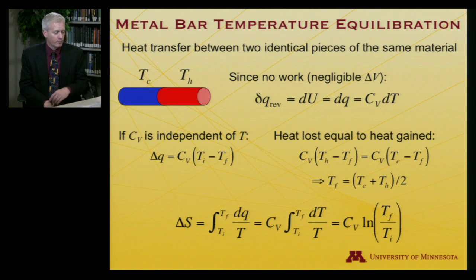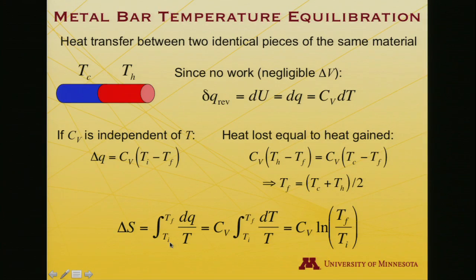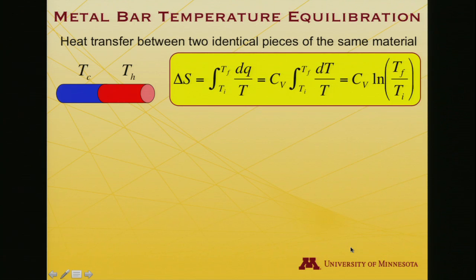So then, what is the change in entropy? Well, it is, for each of these bars, the integral from the initial temperature to the final temperature, irrespective of whether that initial temperature is the hot or the cold, dQ over T. I don't have to write reversible here because heat is a state function in this case. There's no work. So I now replace dQ with CV dT and I end up with the integral from initial to final temperature of dT over T. So that's CV log final temperature over initial temperature.